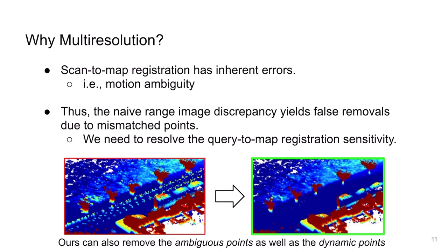From the fact that we cannot guarantee the pixel-to-pixel correspondence is perfect, and the tiny discrepancy would yield false removals, we need to modulate the query-to-map alignment sensitivity by using our method. By using our method, we can remove the ambiguous points as well as the dynamic points like this.